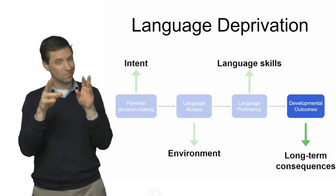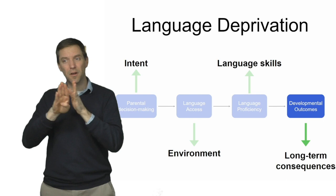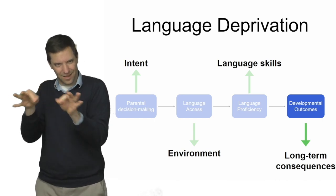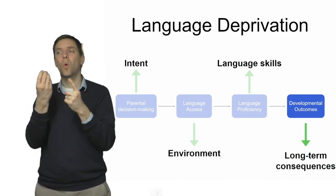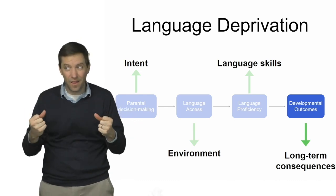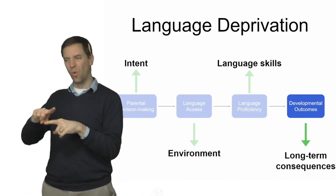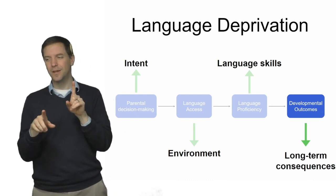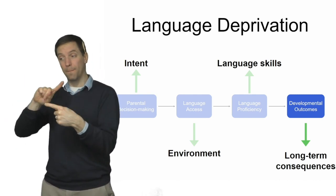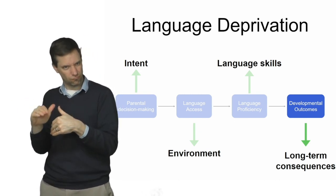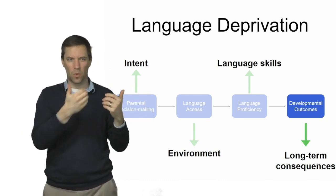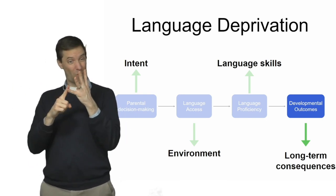A fourth thing people sometimes mean when they use the term language deprivation is talking about the long-term developmental outcomes or consequences in different domains that may depend on language but are themselves distinct from language — for example, cognition, social-emotional development, reading and writing, mental health, physical health, quality of life, and many other things. All of those domains do seem to depend on language, but they are dissociable from it. This fourth sense is about the child, just like the third, but it's not about the child's language, nor the child's environment, nor the parent's intentions. So all of these ideas are related, but distinct.